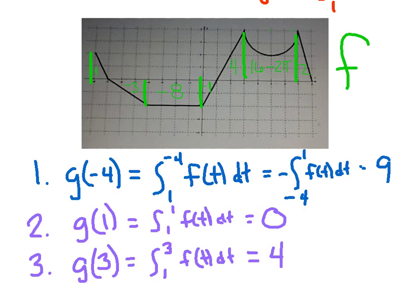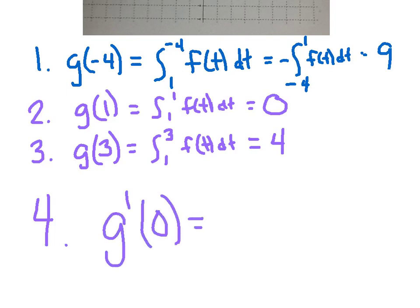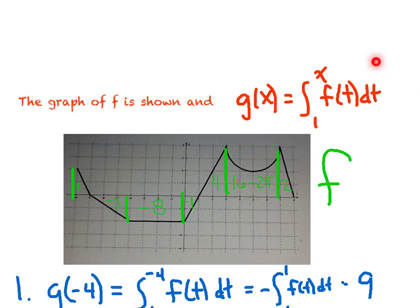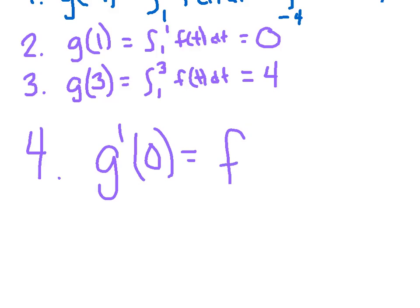Let's step it up and talk more higher-level calculus. Number 4: find g prime of 0. I'm going to go back to my g function and take its derivative — that's the second fundamental theorem of calculus. Take the upper bound, plug it in replacing the t, then take the derivative of the upper bound. So g prime of x equals f of x — the derivative of the upper bound x is 1, so we just get f of x. Then g prime of 0 equals f of 0.